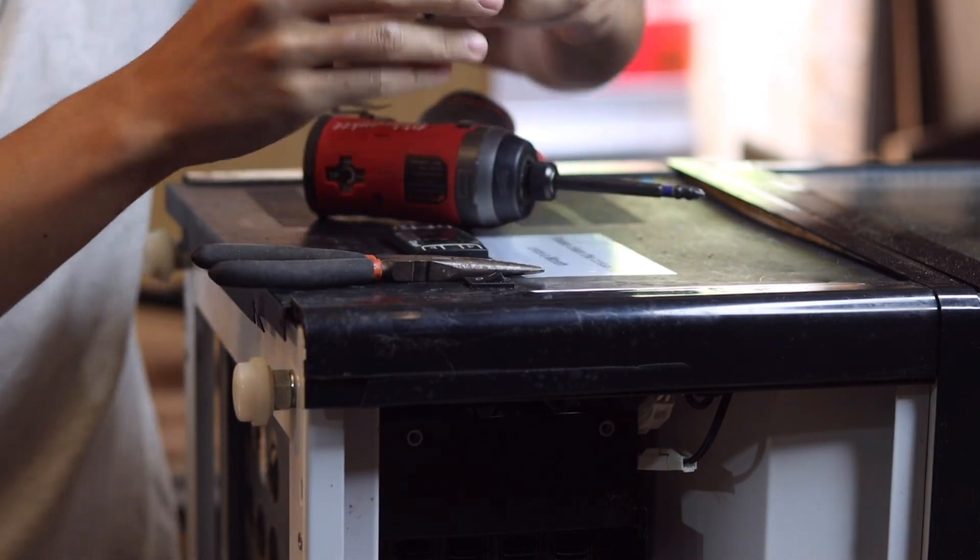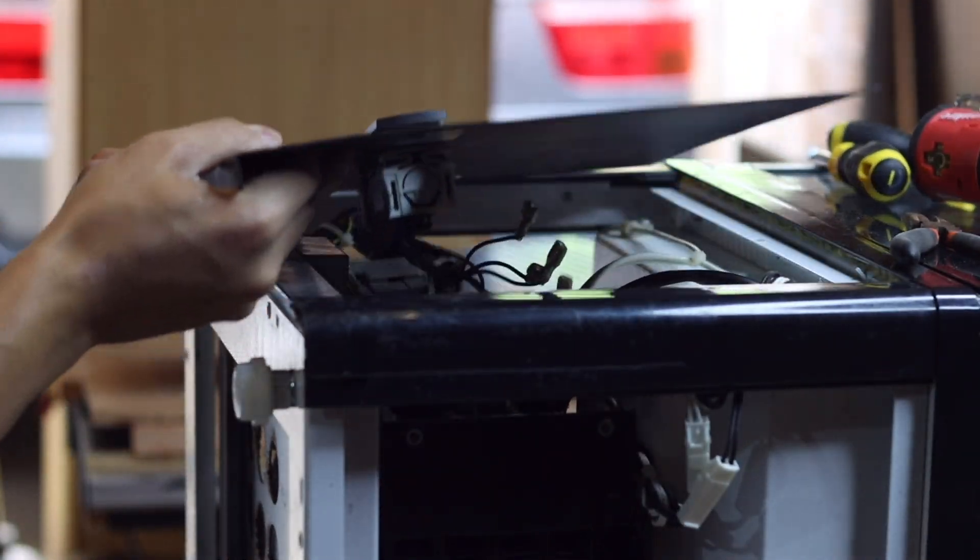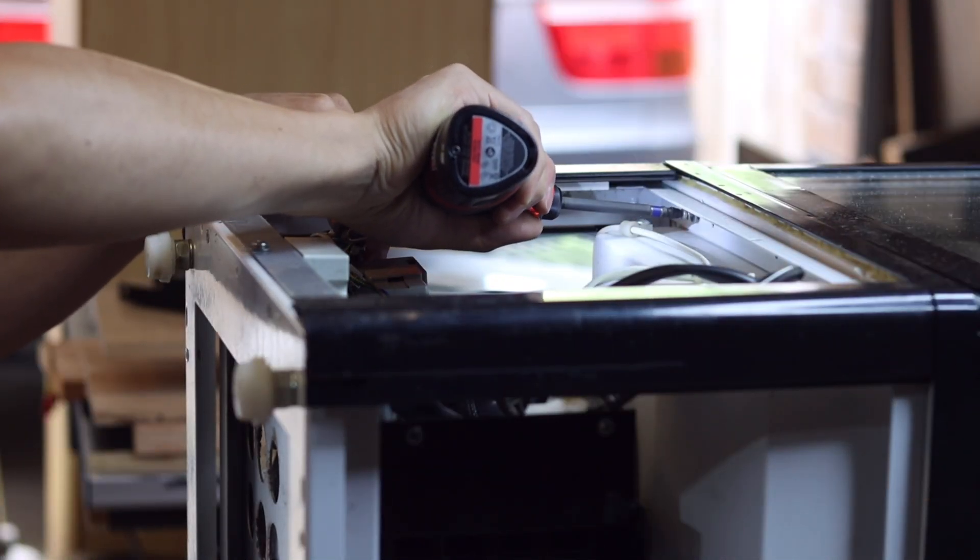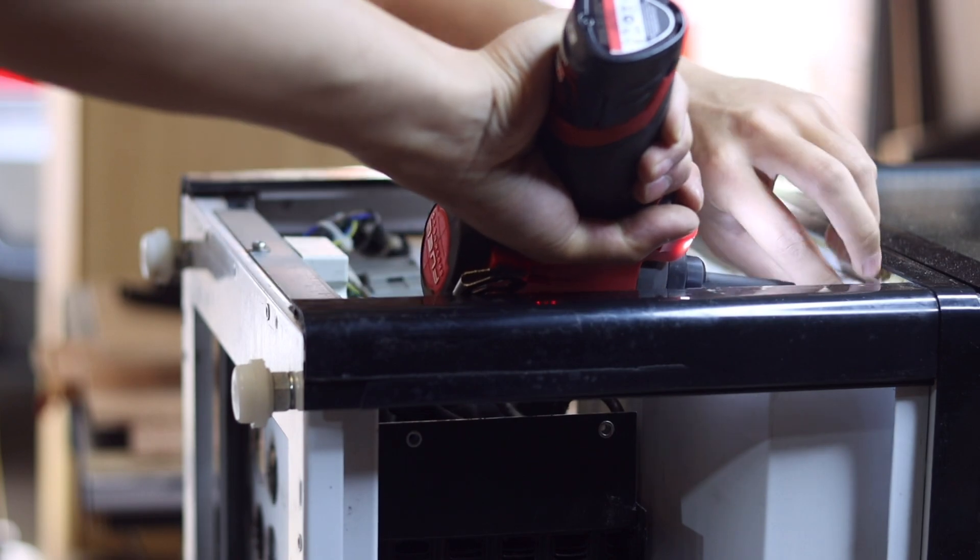The first thing I did was to carefully take everything apart. I was hoping to reuse as much of what came with the fridge as possible, so I was being mindful not to damage anything when dismantling.